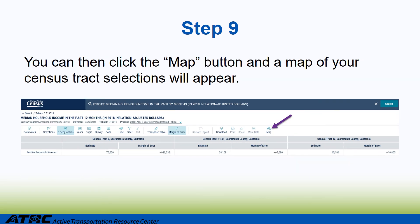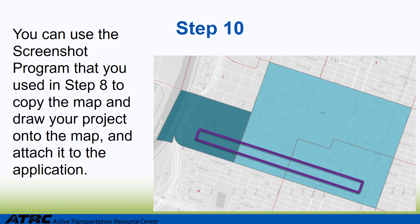Step 9: You can then click the 'Map' button indicated with the purple arrow, and a map of your census tract selections will appear. Step 10: You can use the screenshot program from step 8 to copy the map, draw your project onto the map, and attach it to the application.